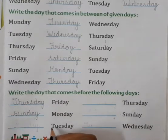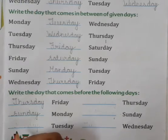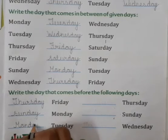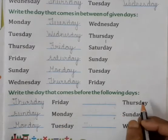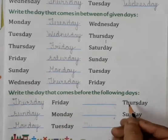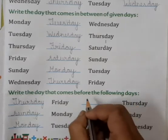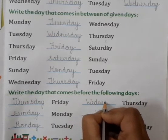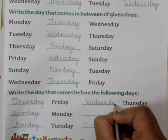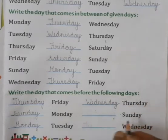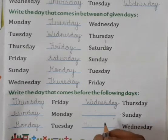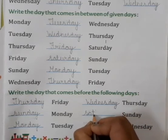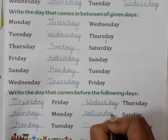Now this is Tuesday — Tuesday se just before aata hai Monday. M-O-N-D-A-Y, Monday. Now next is Thursday — Thursday se before aata hai Wednesday. W-E-D-N-E-S-D-A-Y. Next is Sunday — Sunday se pehle aata hai Saturday. So we will write S-A-T-U-R-D-A-Y.